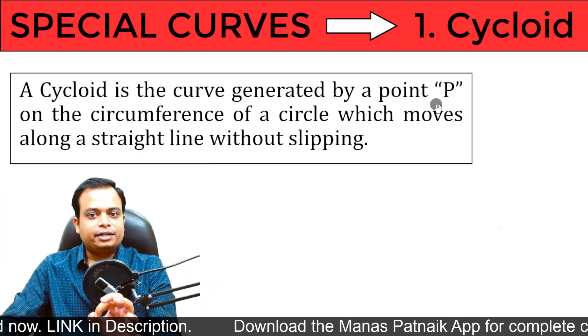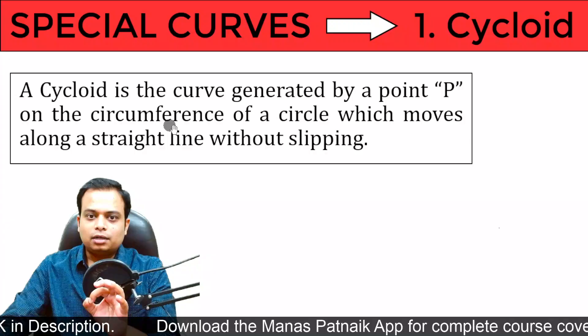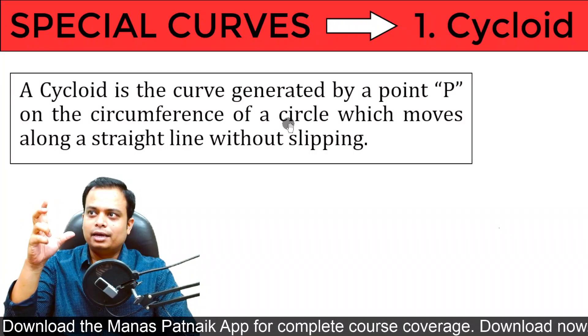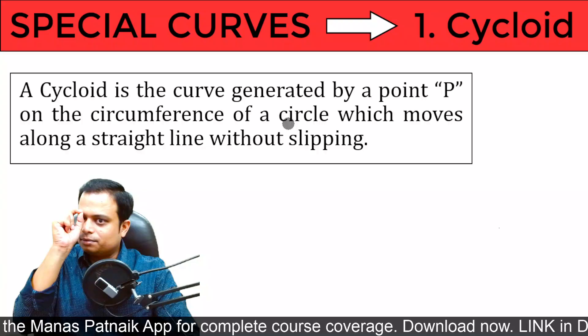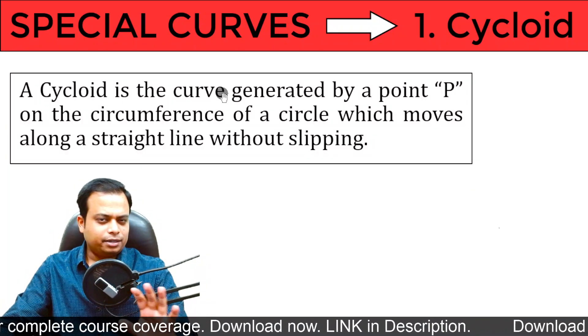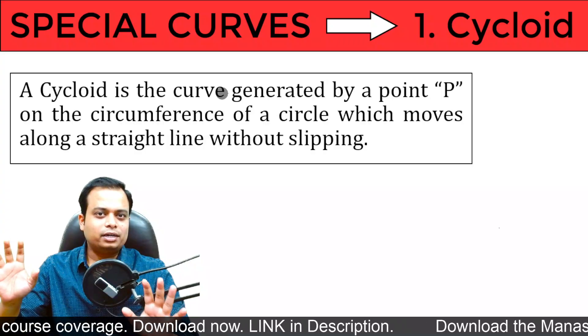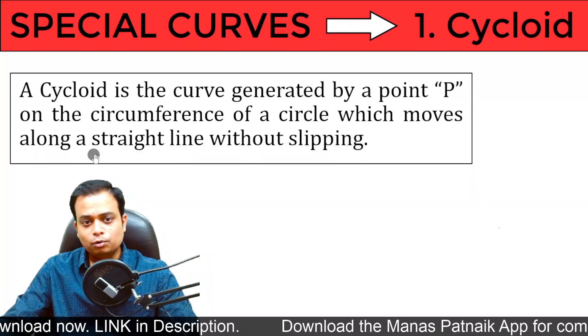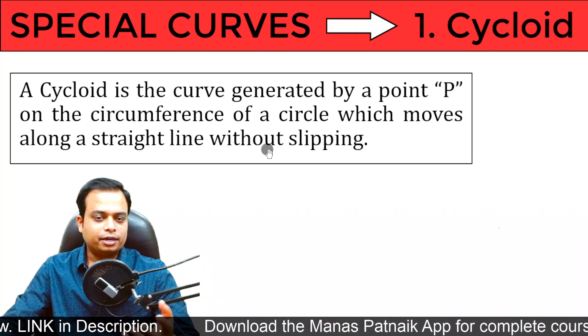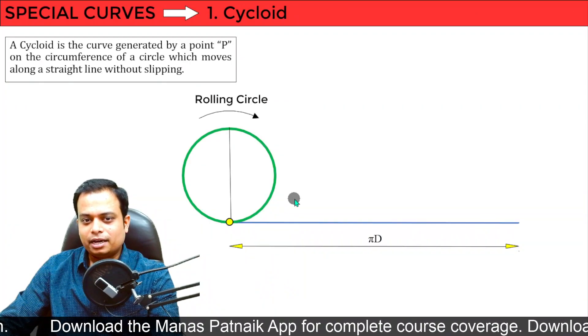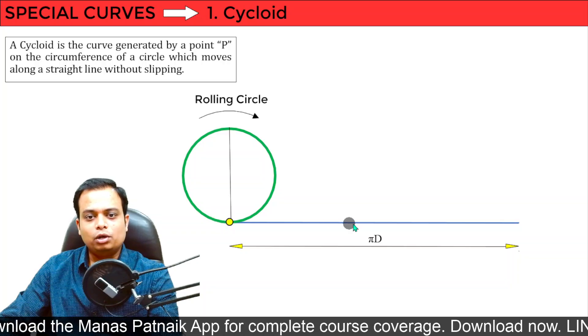A cycloid is a curve generated by a point P on the circumference of a circle. There seems to be some kind of circle, and then on the circumference, there is a point. And that point itself generates the curve, which moves along a straight line without slipping. It's something like this - there is a straight line and then there is a circle which is rolling on the straight line.